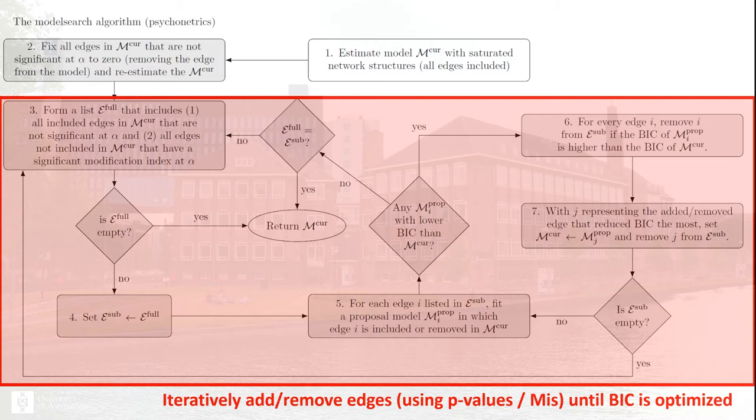Where step-up only added one edge every time using the highest modification index, here we look at all edges that can be removed because they are not significant, and all edges that can be added because they have significant modification indices. We fit all those models and pick the best — add or remove one edge, then do all of that again. So where step-up just adds one edge, refits, and repeats, this will try like 20 to 30 edges, pick one, change that, then try 20 edges again. It also zooms in on edges that were improving BIC in the previous iteration to be a little bit faster — but it's still very, very slow.